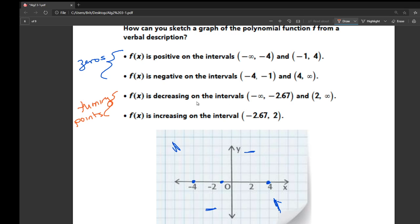So it says f(x) is decreasing on the intervals from negative infinity, which I kind of have that marked, to negative 2.67. So negative 2.67 is like here. So this graph is going down to like there. So this is at negative 2.67.